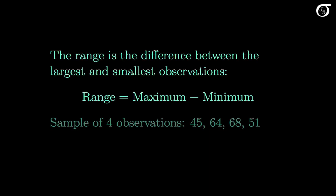There are many different measures of variability. Let's start with a simple one: the range. The range is the difference between the largest and smallest observations — in other words, the maximum minus the minimum.